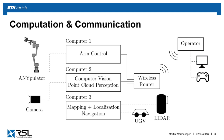Then we have the computer responsible for arm control, on which a possible mission can also be run. Arm control has a ROS interface for sending high-level commands like desired end effector poses or twists, but the control itself does not run with ROS, because we need a better real-time application. There is also an application computer, similar to ANYmal, where different applications can be run.